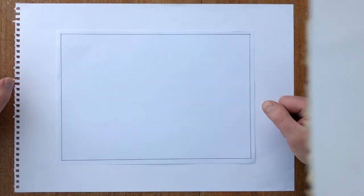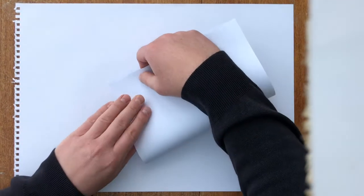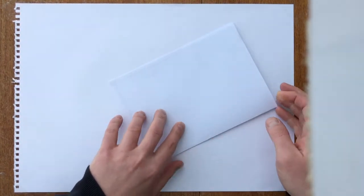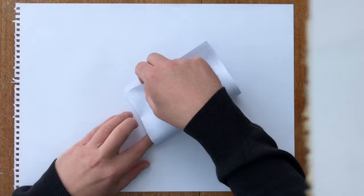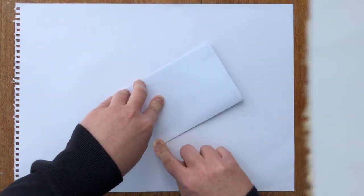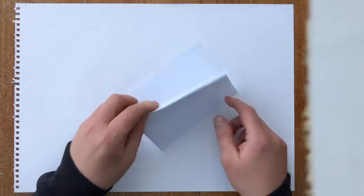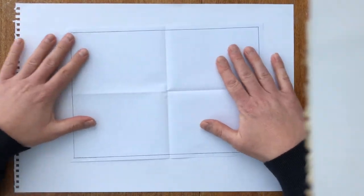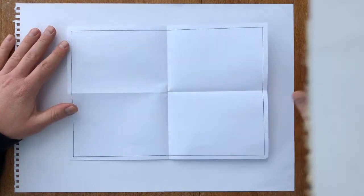Because we're going to do four skills, we're going to split this paper up into four. So we take the paper and we're going to fold it across in half this way and in half this way. When I open back out, you'll see that we've got four rectangles, one for each skill.